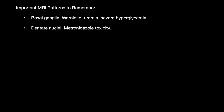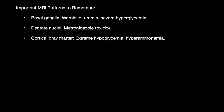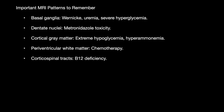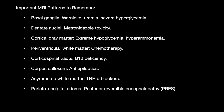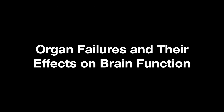MRI patterns to remember: basal ganglia changes are seen in Wernicke's or uremia or severe hyperglycemia; dentate nuclei involvement in metronidazole; cortical gray matter in extreme hypoglycemia or hyperammonemia; periventricular white matter in chemotherapy; corticospinal tract in B12 deficiency; corpus callosum in antiepileptics; asymmetrical white matter in TNF-alpha blockers; parieto-occipital edema in PRES; and central pons in osmotic demyelination.